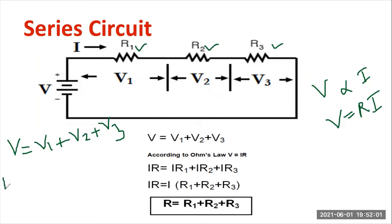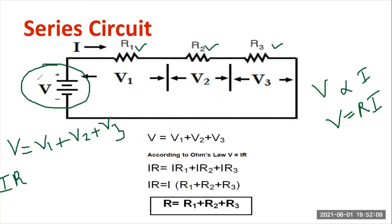Since the same current is flowing, let me write I into R1, I into R2. This gives us the total resistance. V equals I times R, where R is the total resistance — let me call it R equivalent, R subscript EQ.